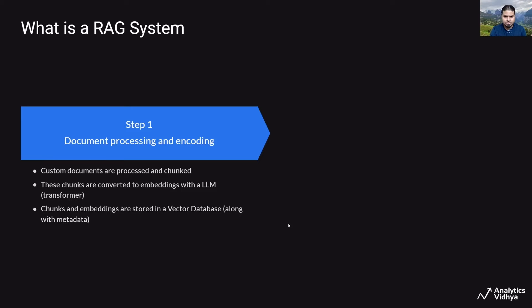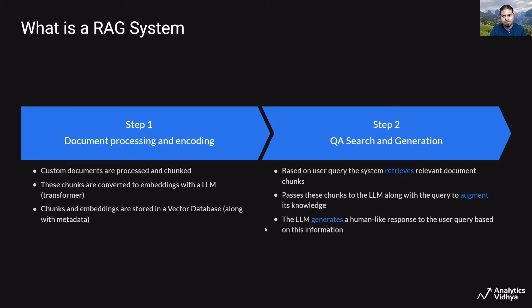Once your custom documents and your own knowledge base have been processed, chunked, converted to embeddings, and stored in a vector database, this is where you start building the RAG system — the actual question answering and search part. The second step is Q&A search and generation, where based on a user question or query, the system retrieves relevant document chunks from your custom knowledge base that are similar to the question asked by the user.